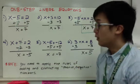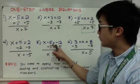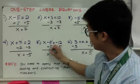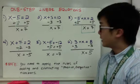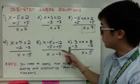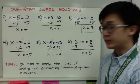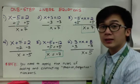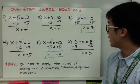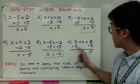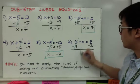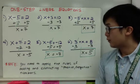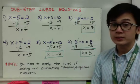For example 5, x minus 5 equals negative 12: add 5 to both sides, leaving x equal to negative 12 plus 5, which is negative 7. You just need to remember your rules for adding and subtracting signed numbers. For number 6, negative 3 plus x equals 8: add 3 to both sides, giving x equals 5. Apply the rules of adding and subtracting positive and negative numbers to find answers in one-step linear equations.